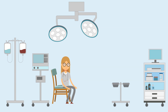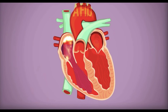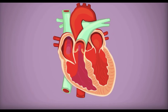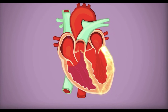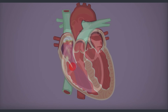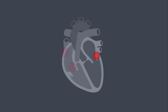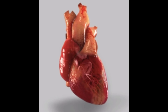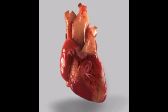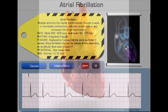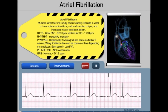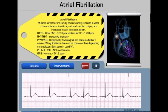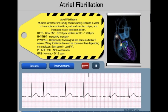During AFib, the top chambers of the heart, called the atria, fibrillate — they quiver or twitch quickly — instead of beating effectively to move blood into the ventricles. This causes the bottom chambers of the heart to beat irregularly.